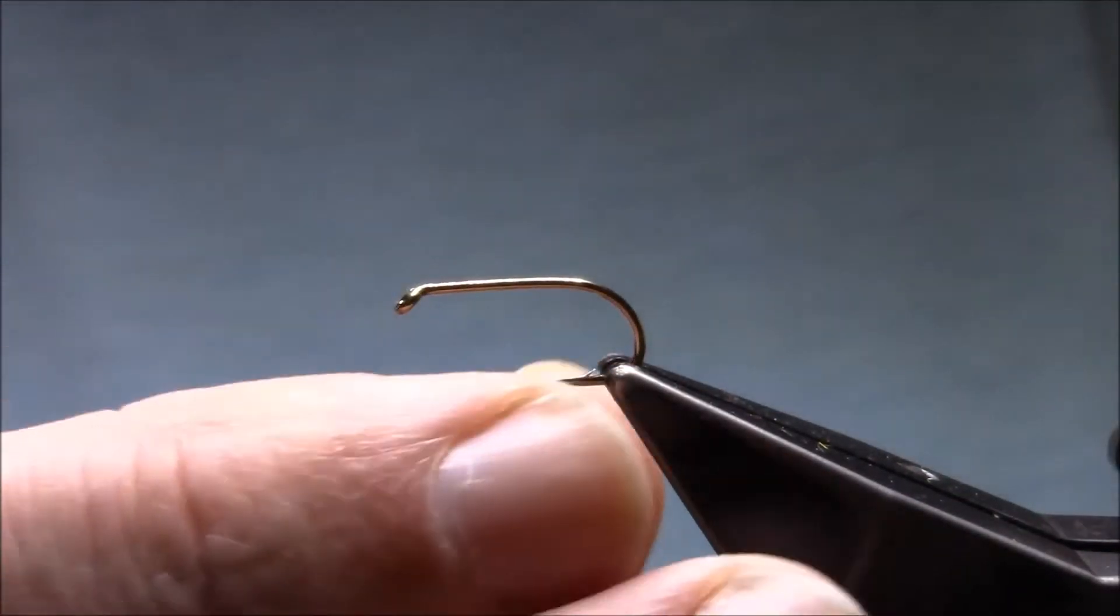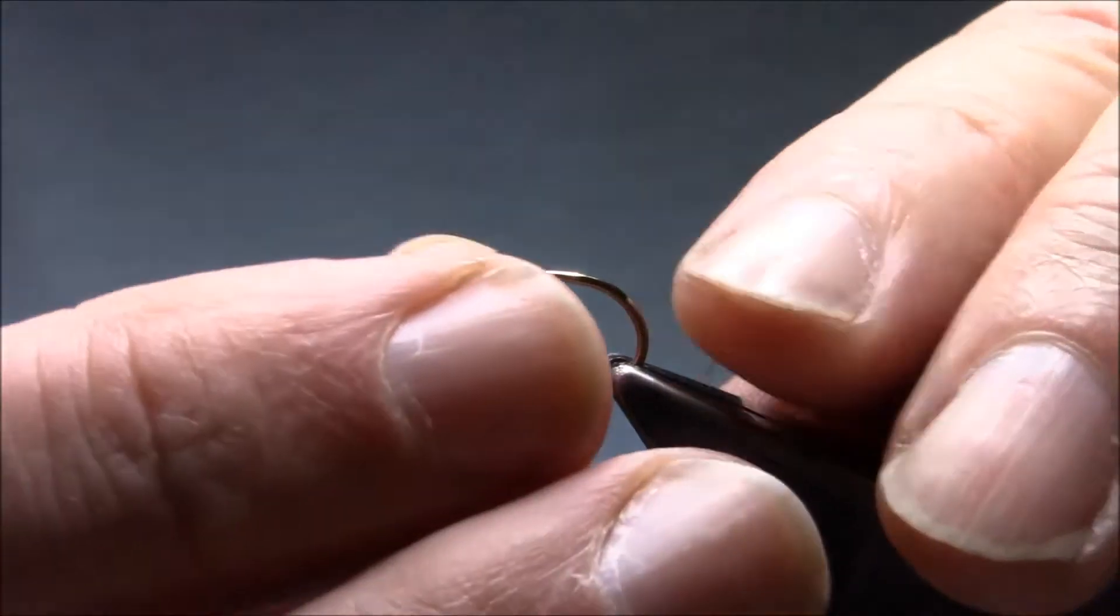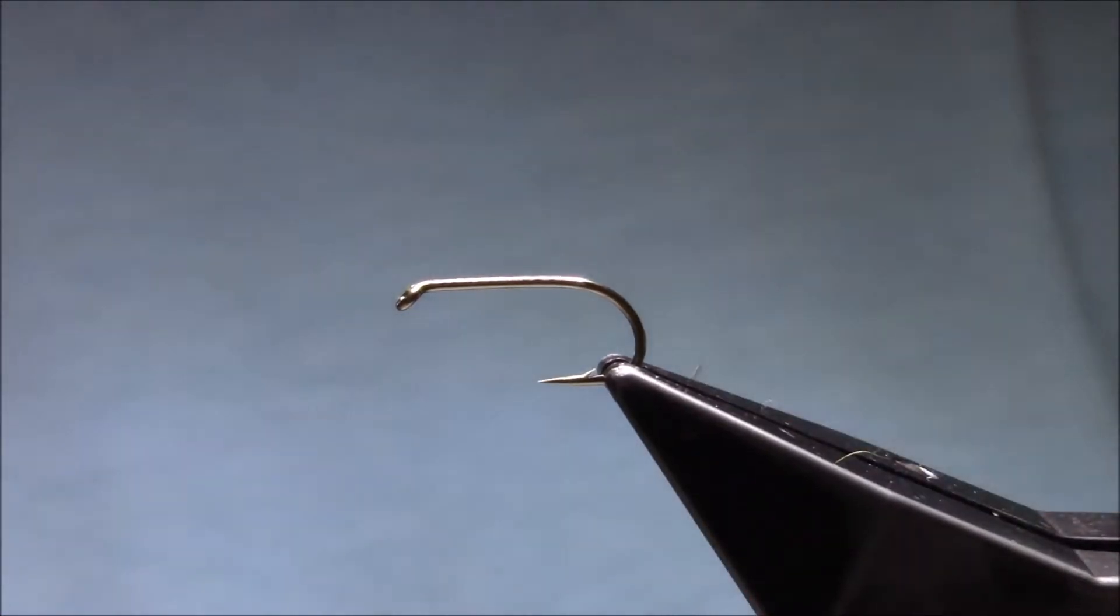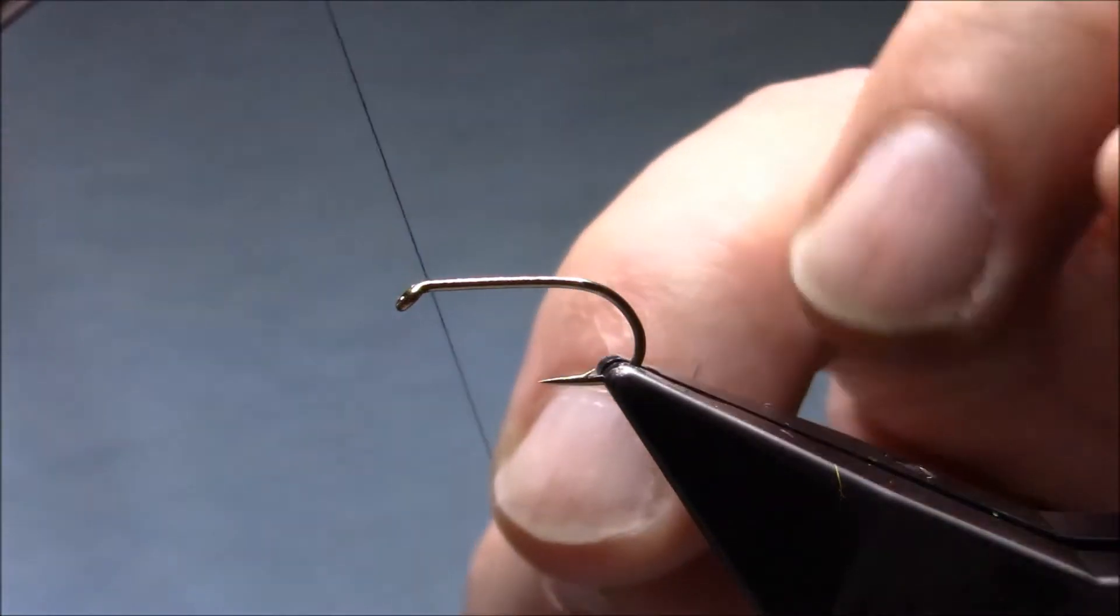The hook I'm using is a Kamazan B175, this is a size 10. Size 12 are also useful because it's a fly that can be fished either buzzer time or olives, or even later in the season in sedges, so it's good to have a selection of sizes.